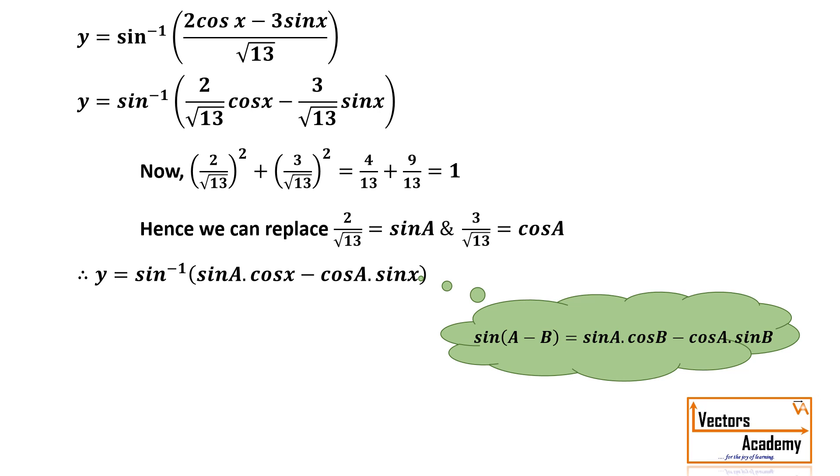Now you can see this formula is of sin a minus b: sin a cos b minus cos a sin b. So you can apply the formula inside the bracket what I will get is sin inverse of sin of a minus x. Sin inverse and sin gets cancelled and what is left is a minus x.